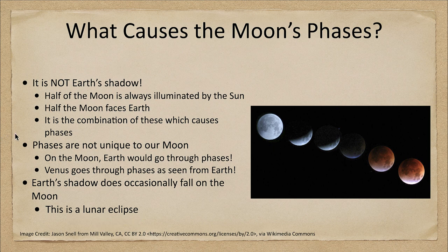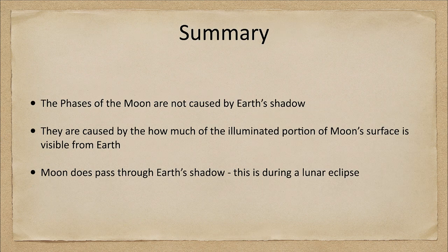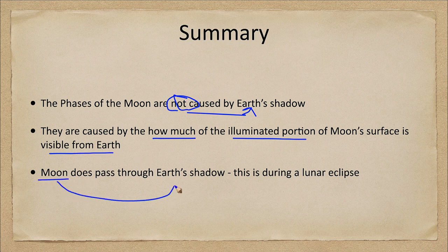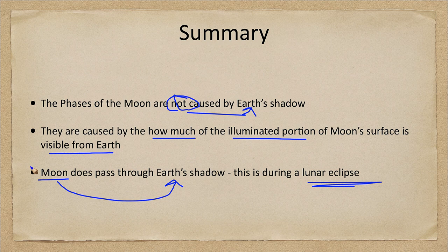So let's go ahead and finish up with our summary. What we looked at today is that the phases of the moon are not caused by the shadow of Earth. They are caused by how much of the illuminated portion of the moon's surface is visible from Earth at that time. It is true that the moon does occasionally pass through Earth's shadow, but this is only during a lunar eclipse, which does not happen every time and is only for a short period — maybe a couple of hours — on just those full moons when everything is lined up perfectly to give us an eclipse.